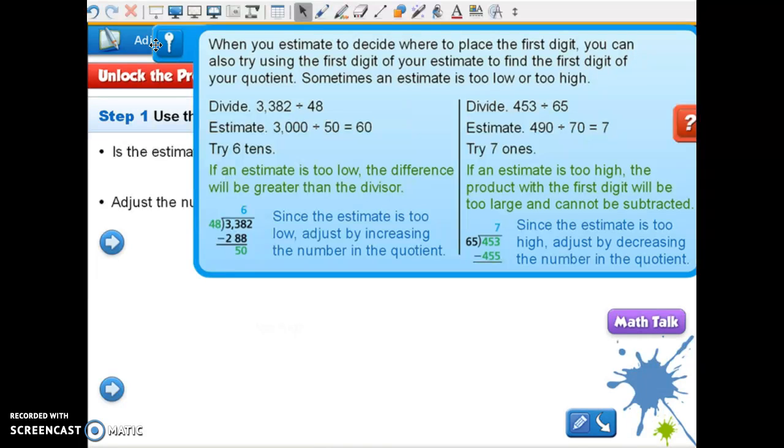Okay, let's look at the second example: divide 453 divided by 65. Estimate 490 divided by 70 equals 7, since we bumped our divisor to 70. 490 is a multiple of 7, so that's why they rounded 453 to 490.